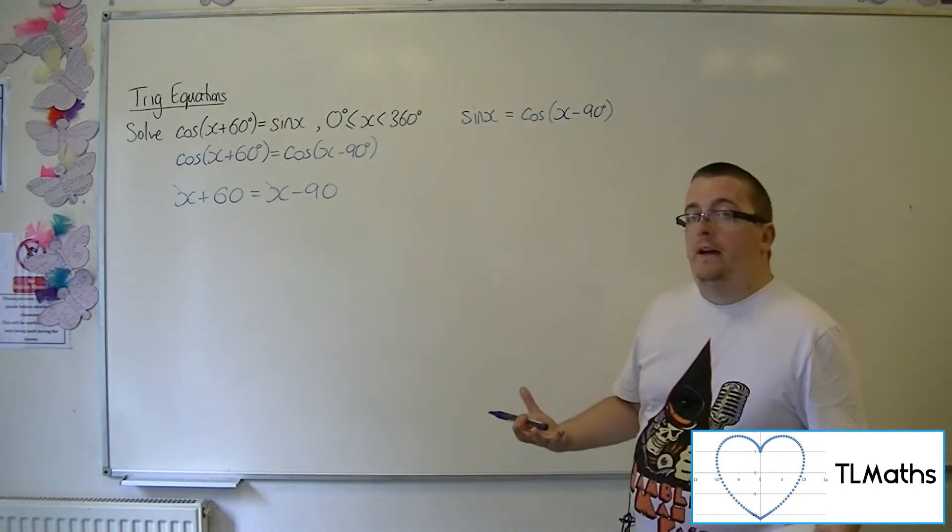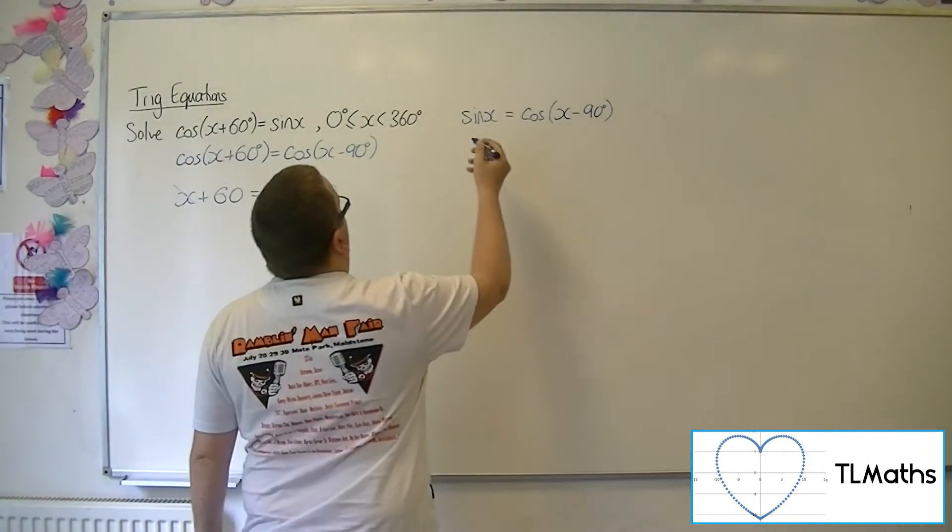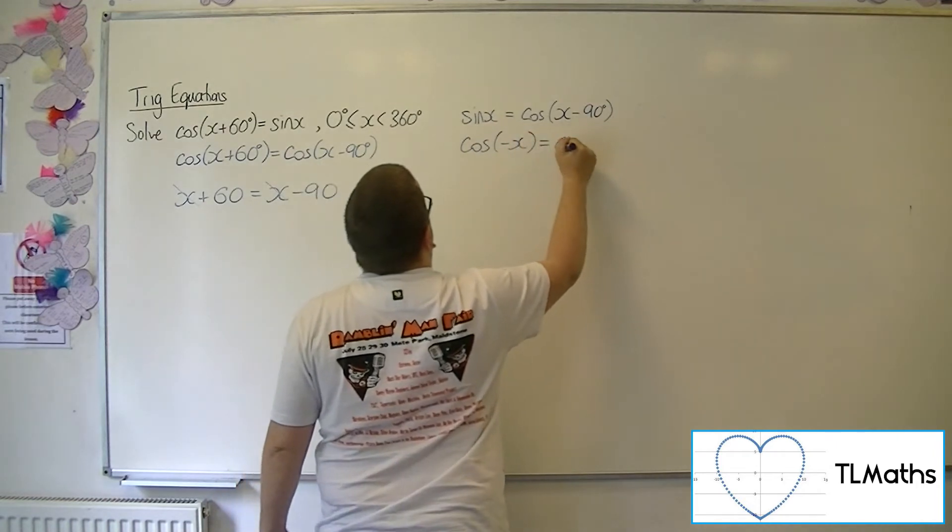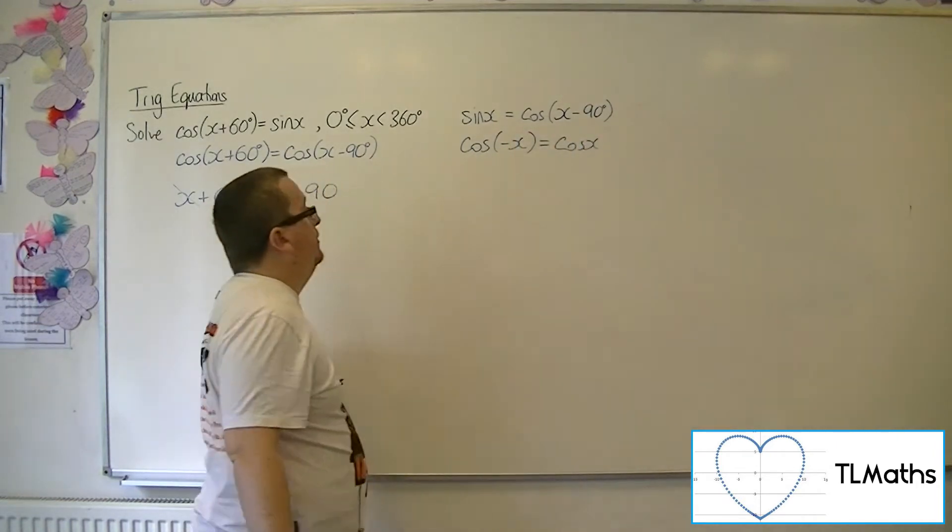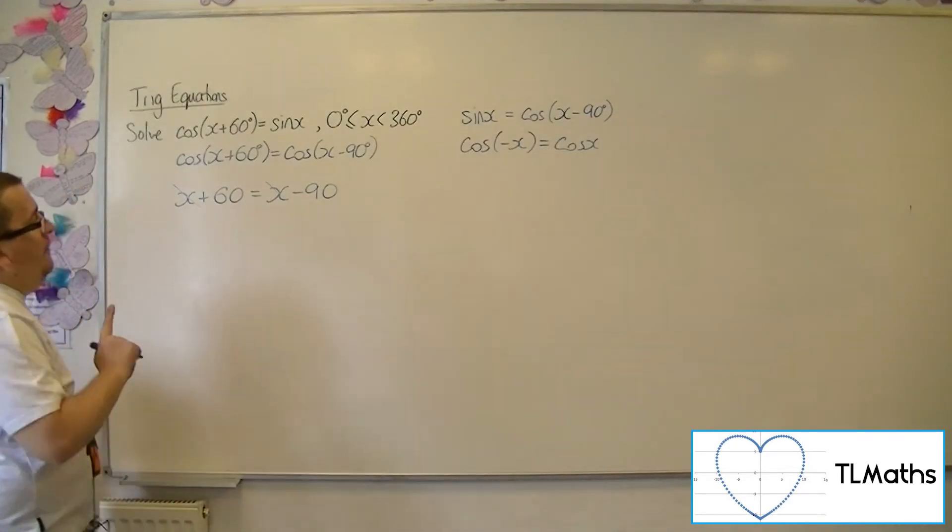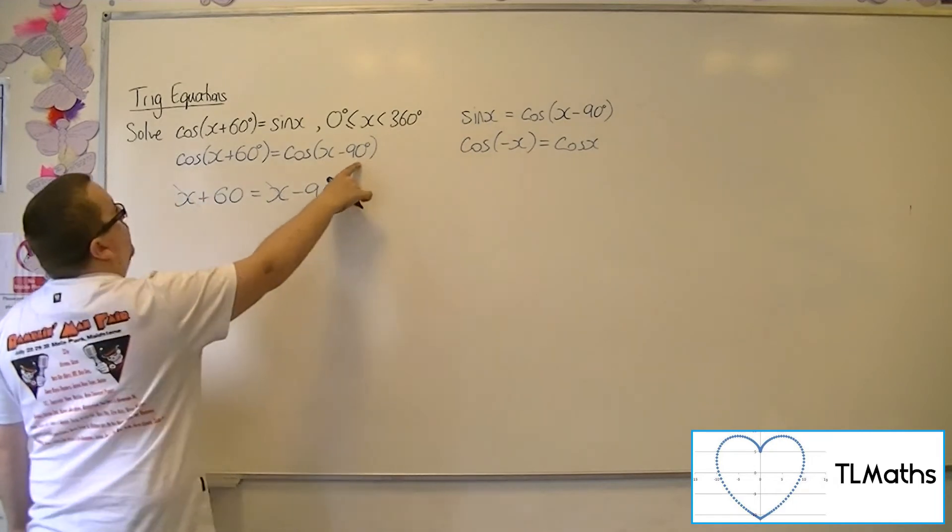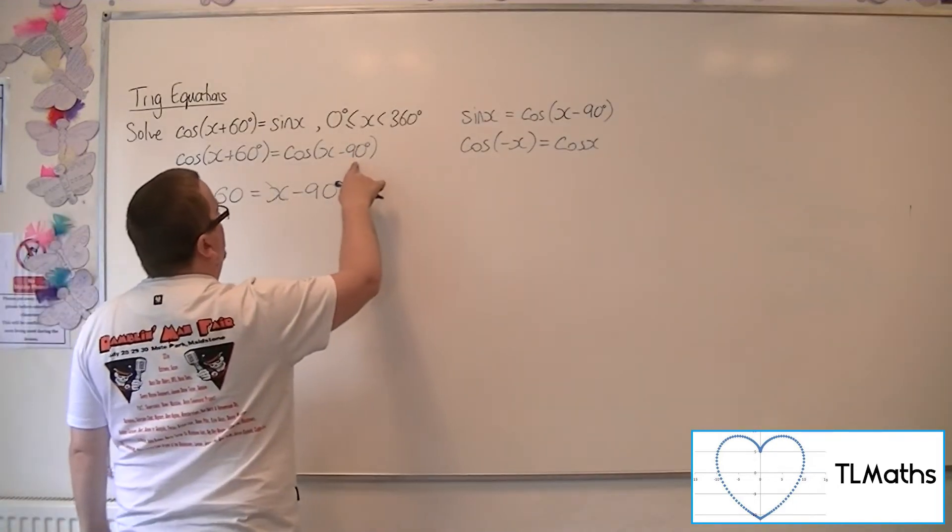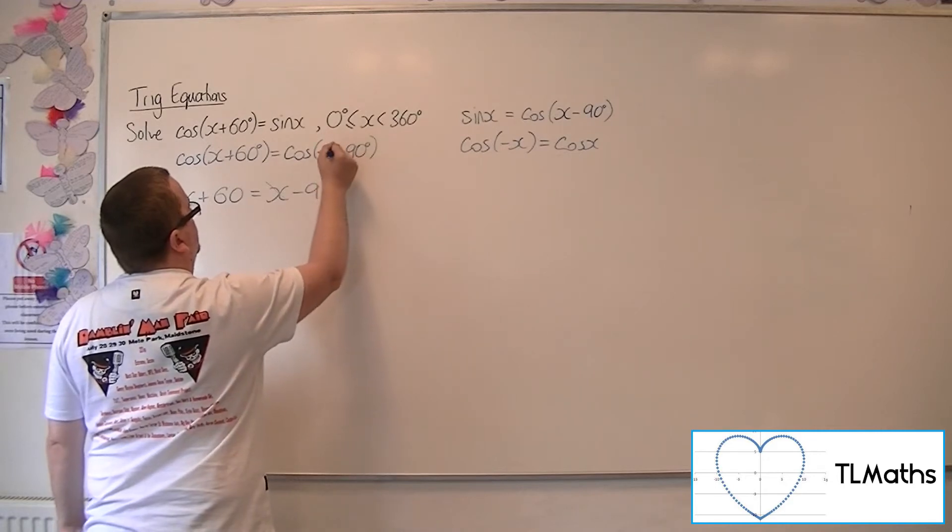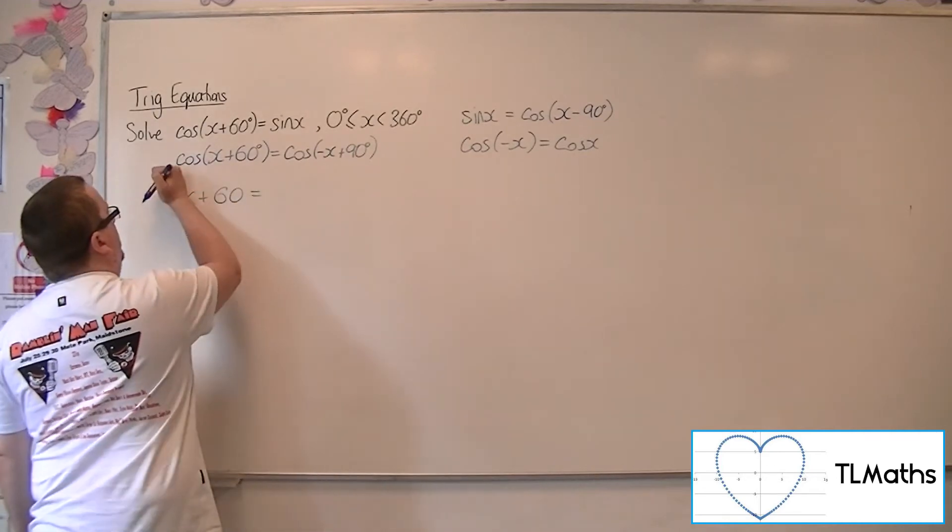However, we do know that cos(-x) is the same as cos(x). So actually, if I replace x - 90 with -x + 90, then that will give me an equation I can solve.